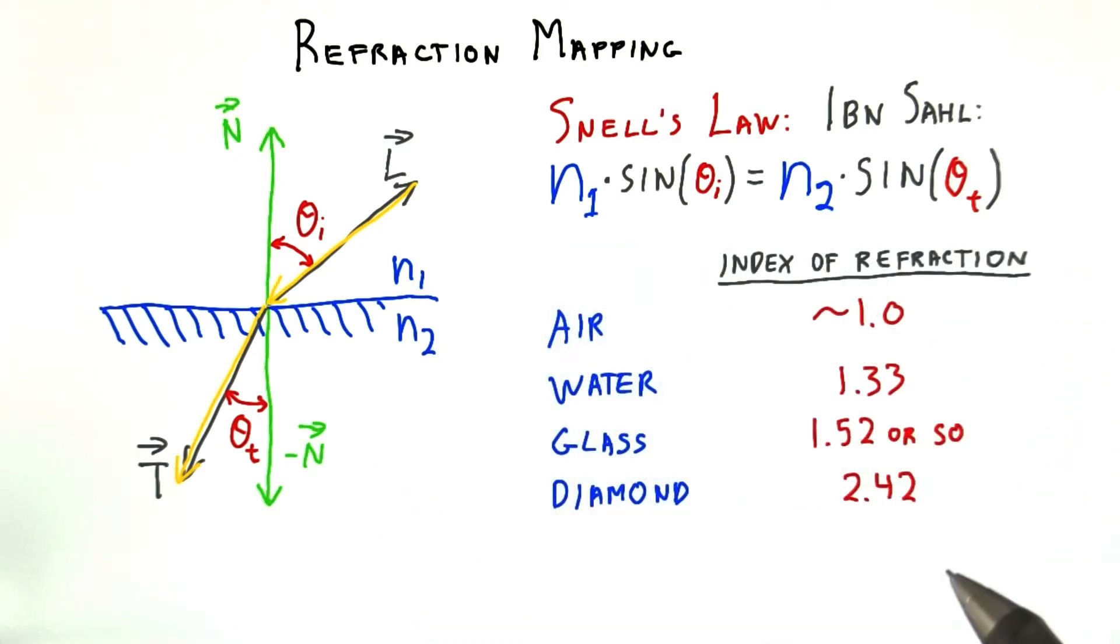As examples, here are some indices of refraction. Air is just about 1, very close to vacuum. Diamond is very different than glass, and so that's one thing that differentiates them.